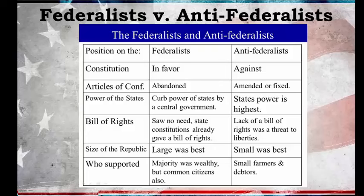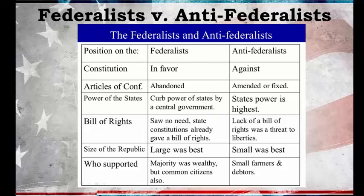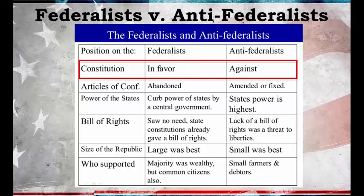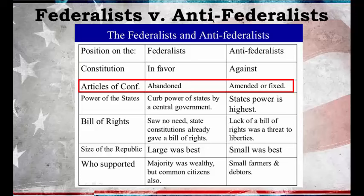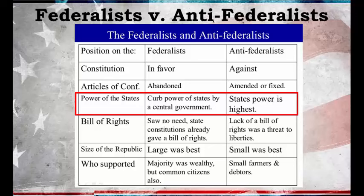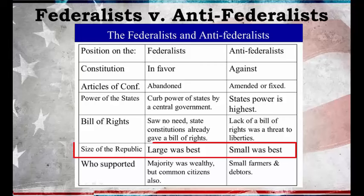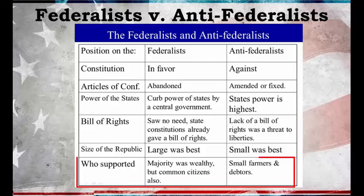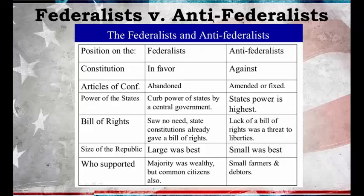Here we have a chart — I recommend pausing and writing this down. The Federalists were for the Constitution; the Anti-Federalists were against. Federalists said the Articles of Confederation were so flawed we needed to get rid of them and write a new plan for government, while the Antis said let's just fix the original. Federalists favored Federalism — power shared between a strong central government and the states — whereas the Antis wanted state governments to hold almost all power with a very weak national government. Federalists were likely to be wealthy merchants, while Anti-Federalists were usually small, less wealthy farmers.